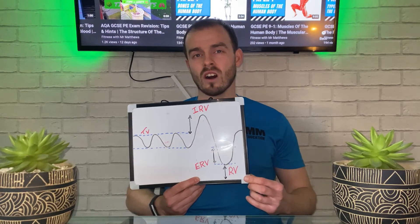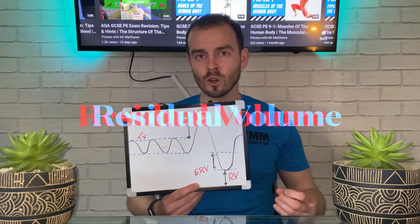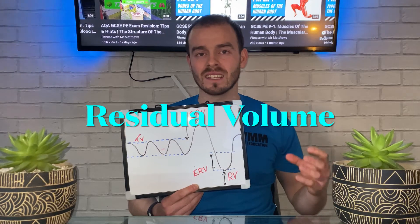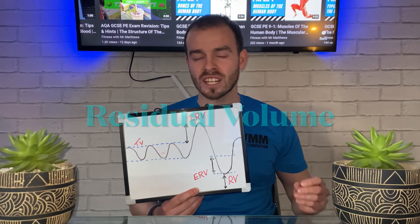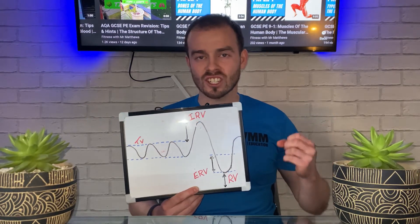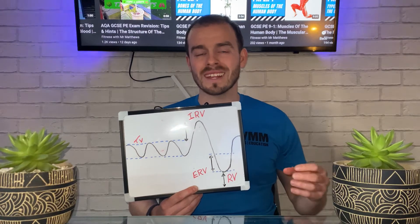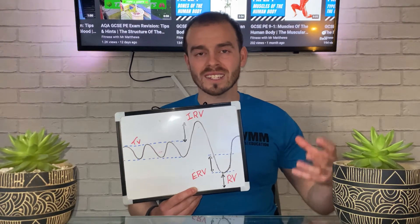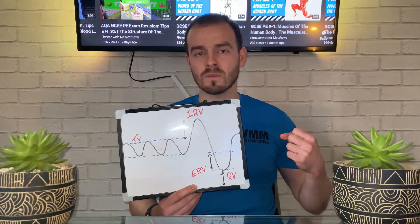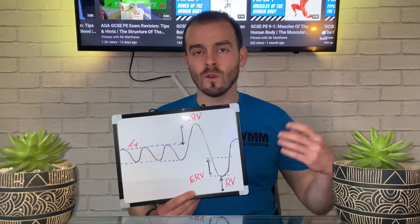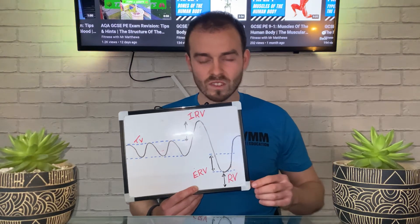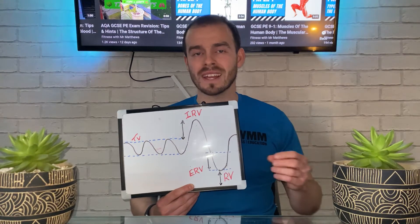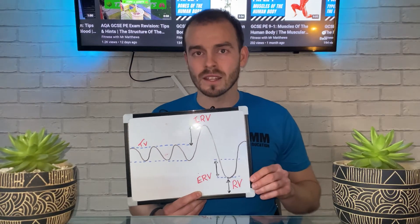At the bottom of the trace you can see RV — residual volume. That's the amount of air that remains in the lungs that never ever changes. Whether we inhale, exhale, inhale deeply, or exhale forcefully, residual volume is always there — it's simply the amount of air that always remains in the lungs.